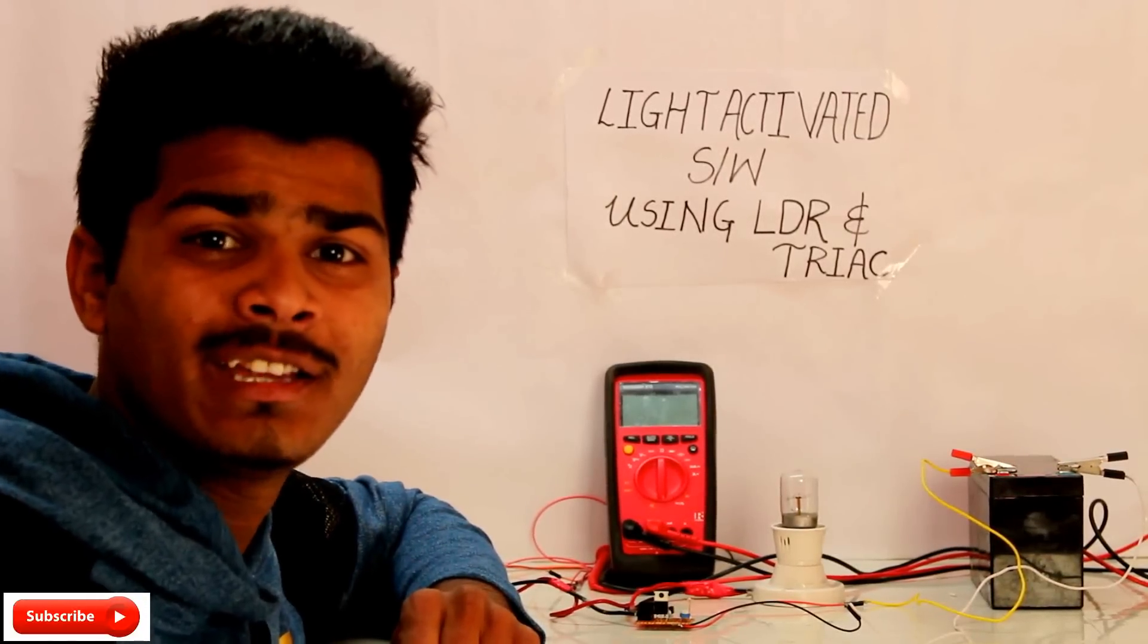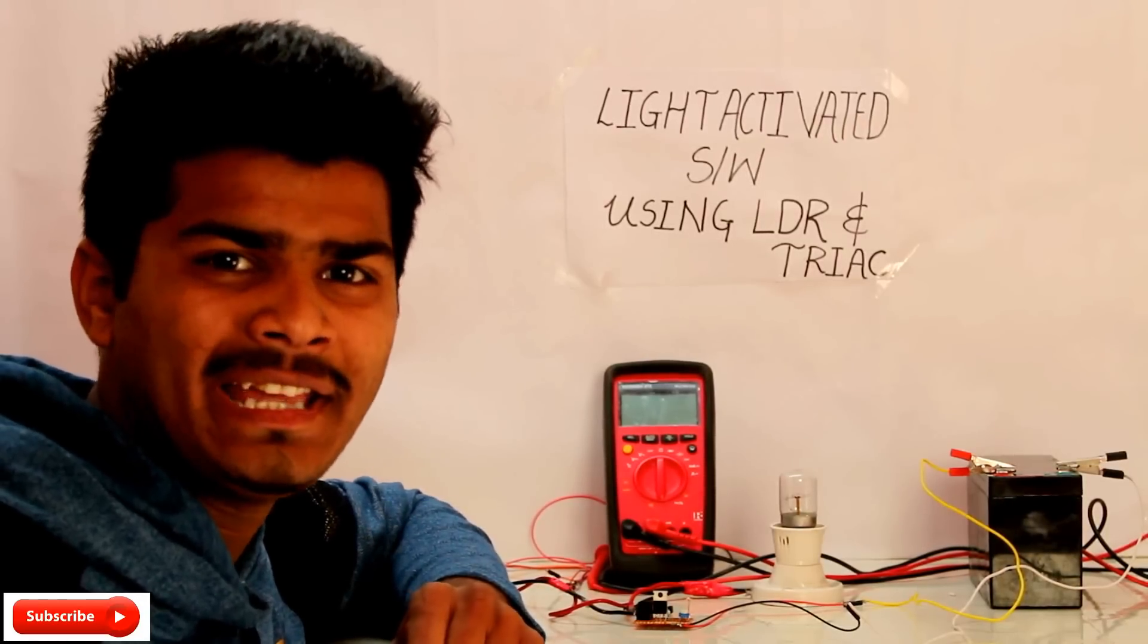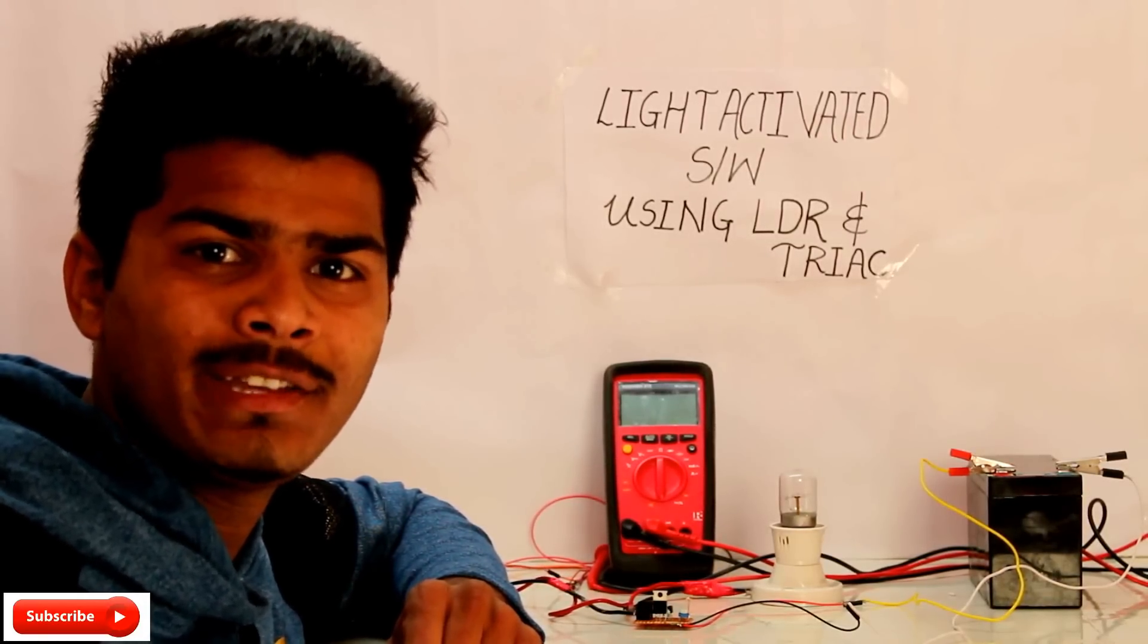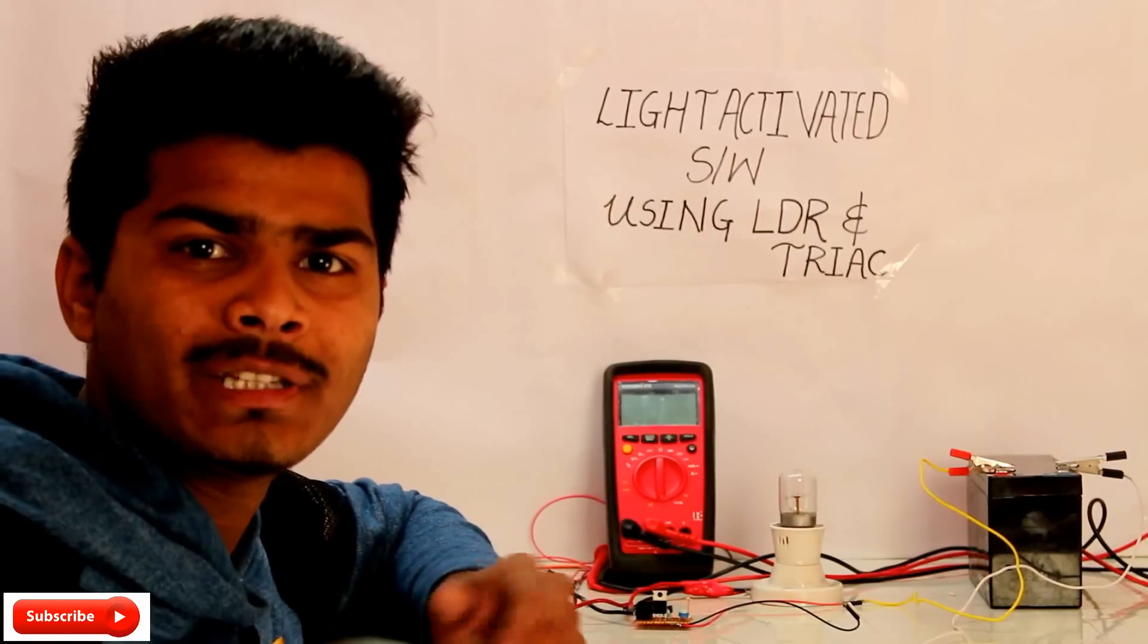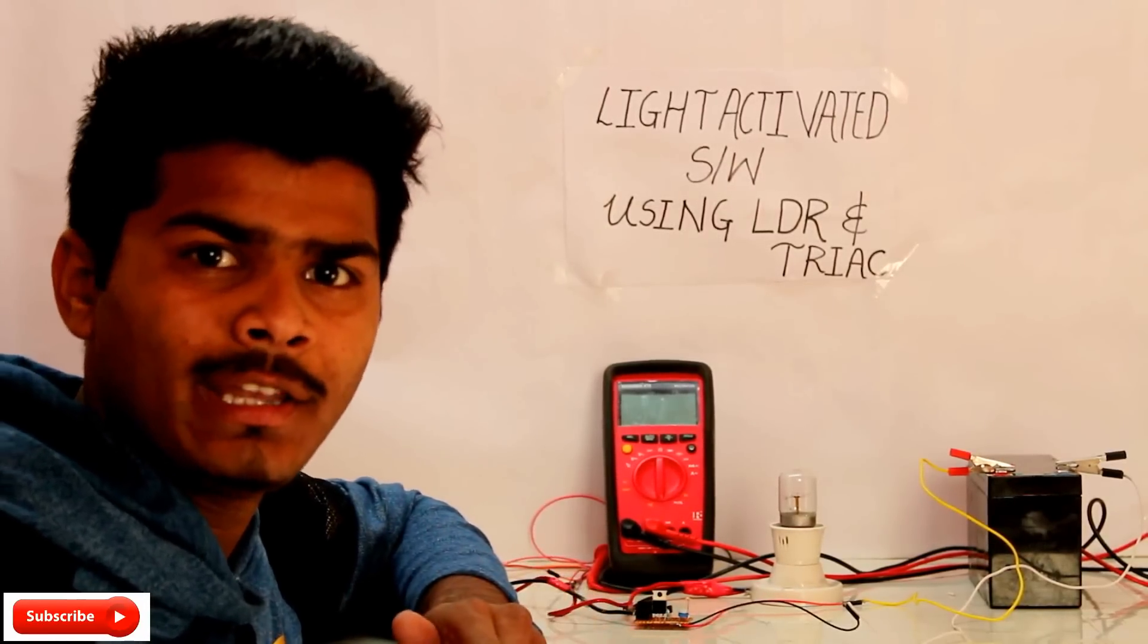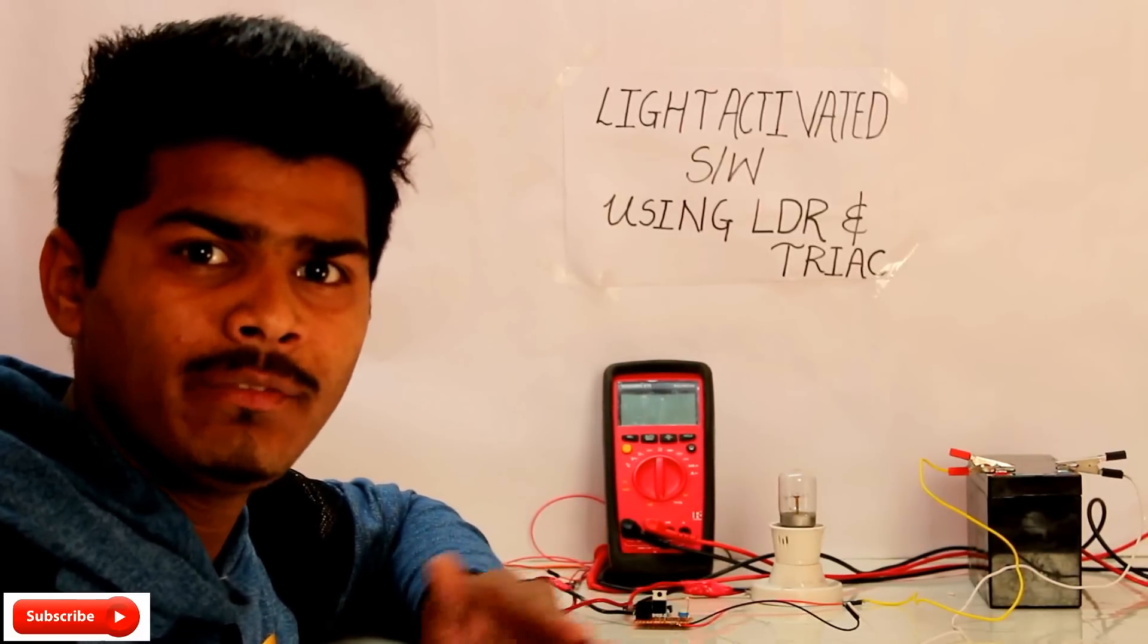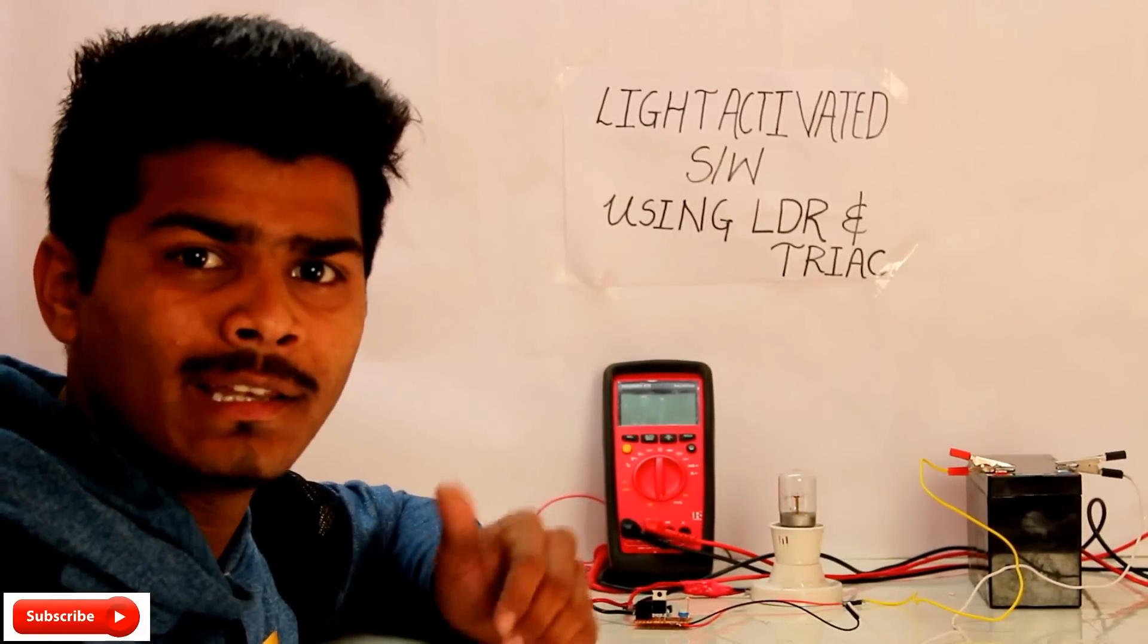Hi friends, this is Bhushan here and today we are going to make a very simple light activated switch using LDR and TRIAC. It is very simple because conventional light activated switches require much more components and relay also, and we don't use any relay. Instead of relay we use a TRIAC.